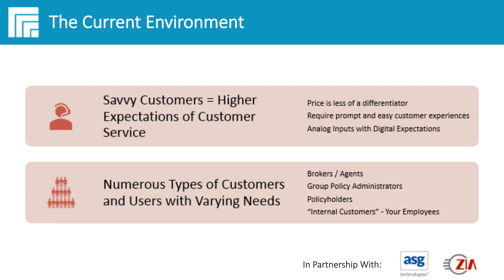Around the current environment: what we're seeing now is very savvy customers. You'll hear a lot about how Amazon has changed customer expectations. Traditional brick-and-mortar businesses now face customers who have what we call analog inputs with digital expectations. At an insurance company, you might still require a physical paper document with handwriting, but as the company receiving that input, how do you give back a digital experience and quick turnaround to meet those customer expectations? Customer experience — not price — is really the differentiator for growth in most industries now.